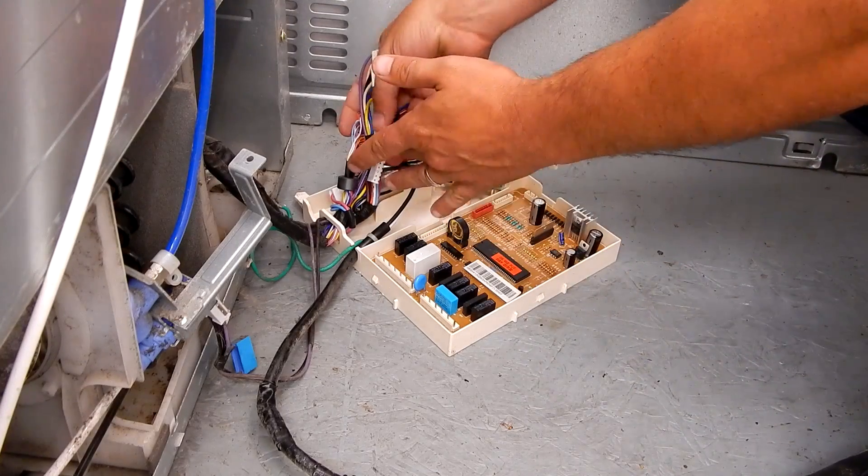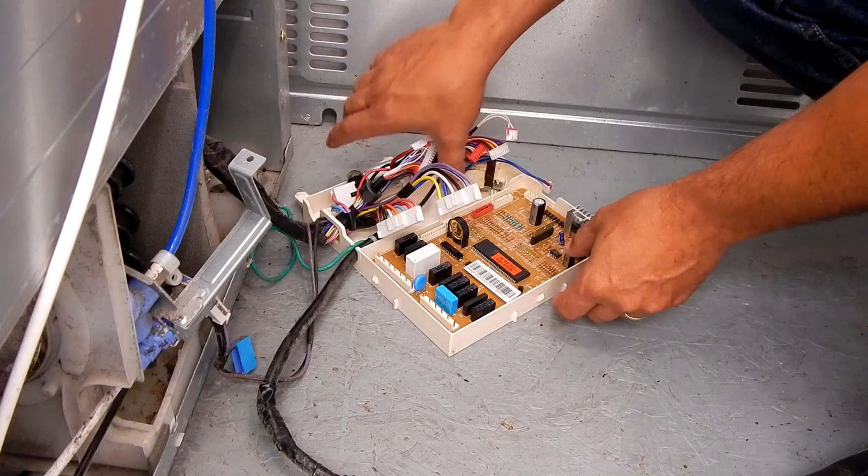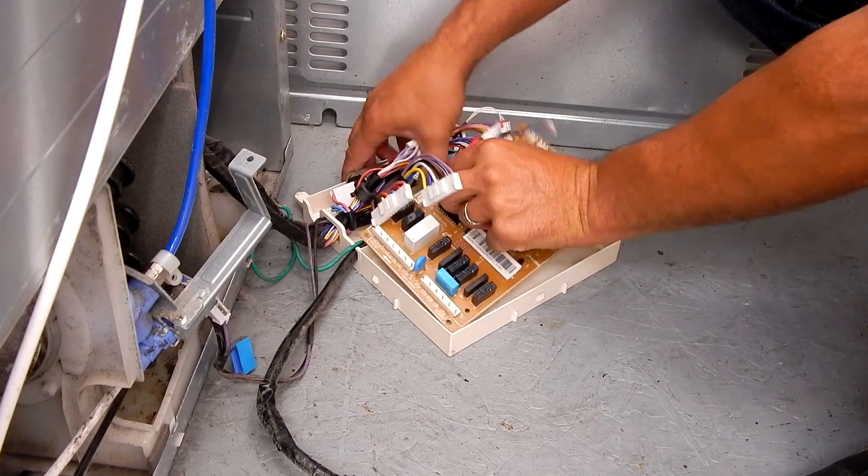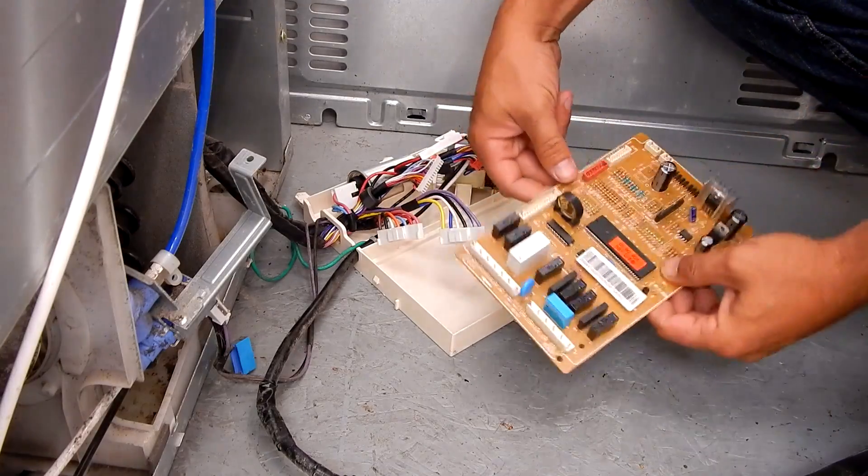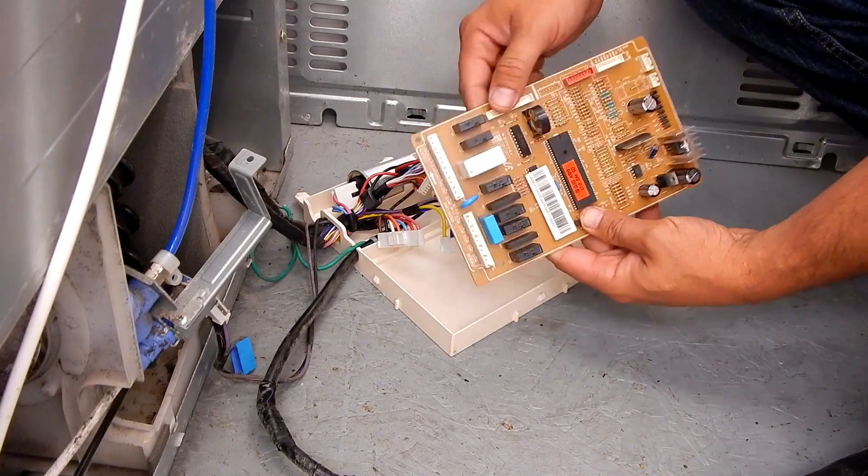Okay, so from this point right here we can go ahead and just unclip it. It's not screwed in. Basically there's a little tab right here. I'll just pull back on that and the whole board comes out. And this is what we're going to be messing with.